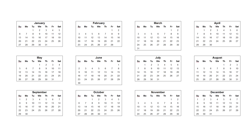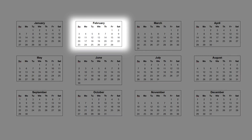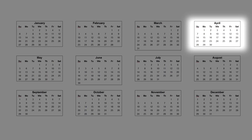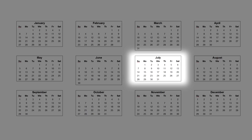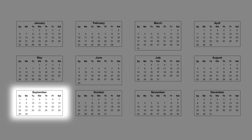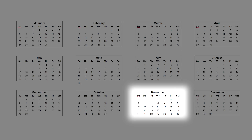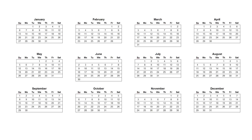Listen and repeat the months of the year. January. February. March. April. May. June. July. August. September. October. November. December. That's the 12 months of the year. Every year has 12 months, and there are 52 weeks in a year.